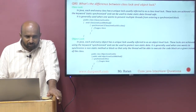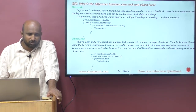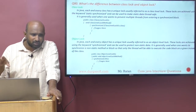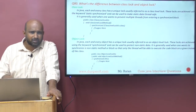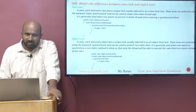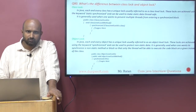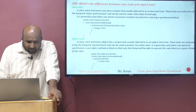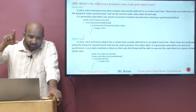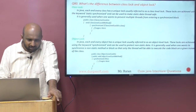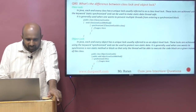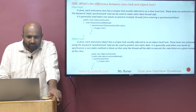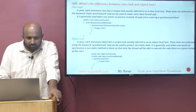Synchronized blocks mean that particular block of code allows only one thread to access it. If you get the class level lock using a synchronized block with parentheses, you give the class name as the argument — that is class level lock.